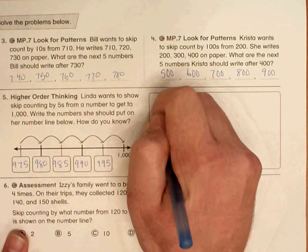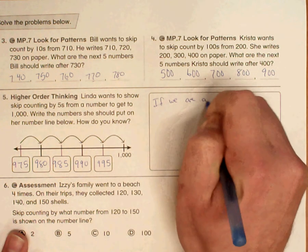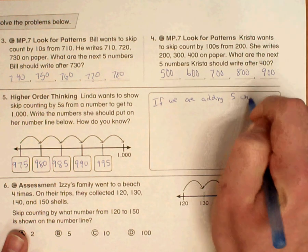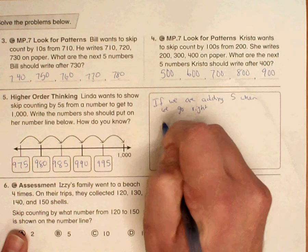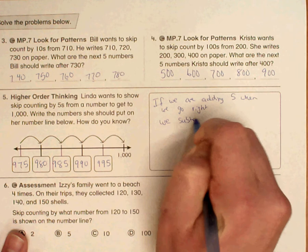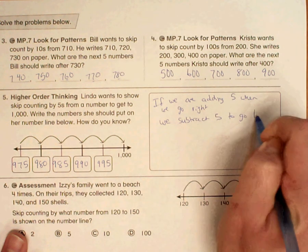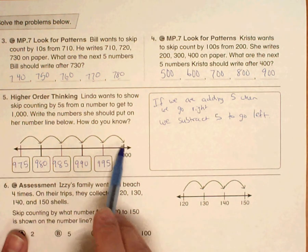So if we are adding 5 when we go right, we subtract 5 to go left. So add, subtract.